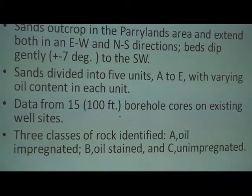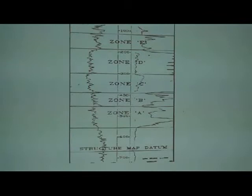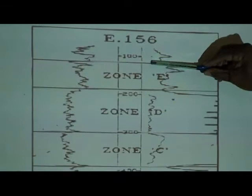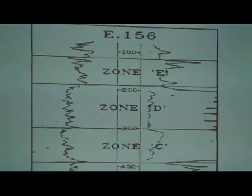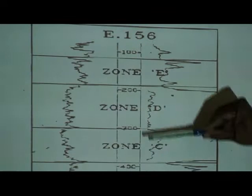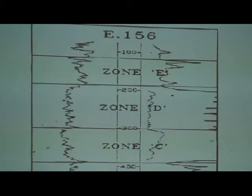The main sands are called the A sands — because it's the best type rock, it's oil impregnated — then you've got B, stained, and C, not much oil in it. Of the five units A, B, C, and E, these are the units where the tar sands exist. Very shallow — this is 100 feet. There are outcrops to the surface, so lots of areas you have large mounds of tar sands on the surface. But the C and D units are where most of the sands exist — those are the better units. We go way down to about 600 to 700 feet. So that's the range we're looking at: 100 to 700 feet, mostly about 600 feet.